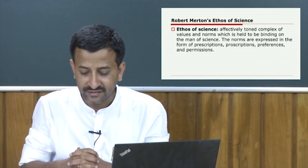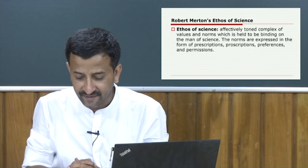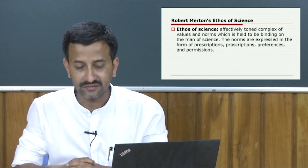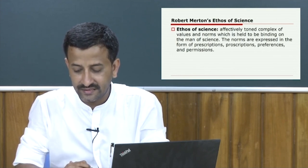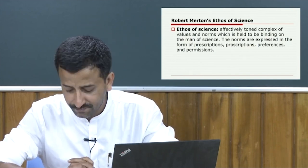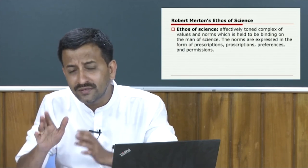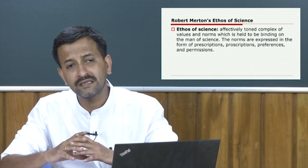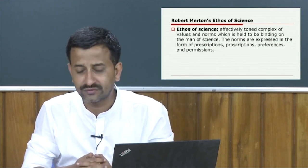Merton argues that even though scientists may not individually be disinterested or unbiased, there is something distinctive about the institution of science that makes scientists behave that way at an institutional level. In other words, because the institution enjoins disinterested activity, it is in the interest of scientists to conform to this norm and internalize it. These are the aspects of motivational and institutional norms.